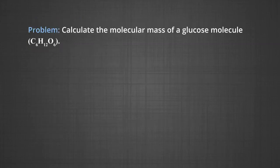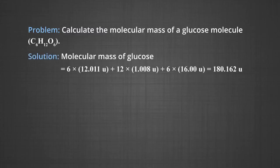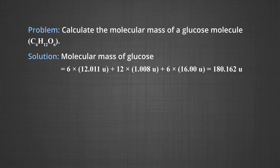We have another problem: calculate the molecular mass of glucose (C₆H₁₂O₆). Molecular mass of glucose = 6 × 12.011u + 12 × 1.008u + 6 × 16.00u = 180.162u.